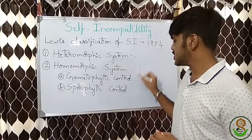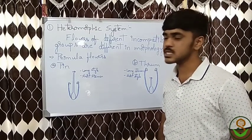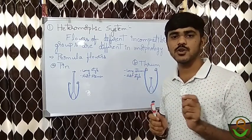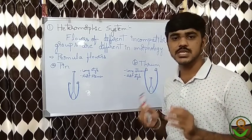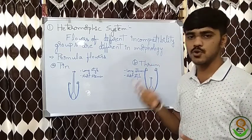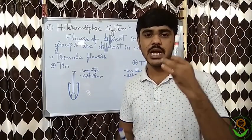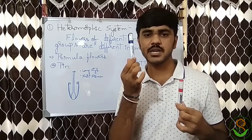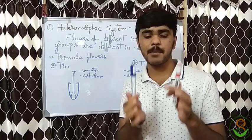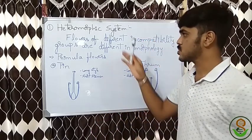Let's start with the heteromorphic system. In the name itself: 'hetero' means different, so heteromorphic refers to differences in morphology. Flowers of different incompatibility groups are morphologically different from each other. These groups are incompatible within themselves but compatible with each other — that is how we define the heteromorphic system.